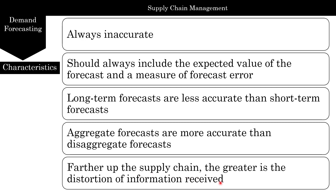Further up the supply chain, the greater the distortion of information received. The further away you are from the actual customer — for example, if a customer is buying something at Walmart and you're at the start of the supply chain — you have a greater chance of distortion of information.